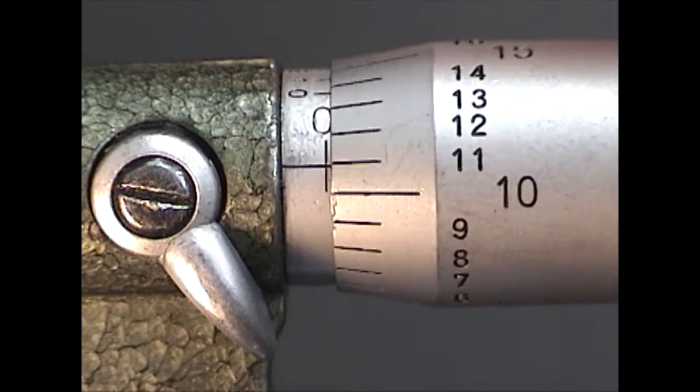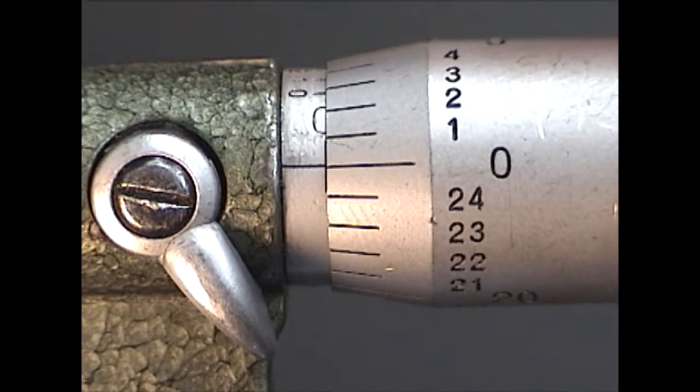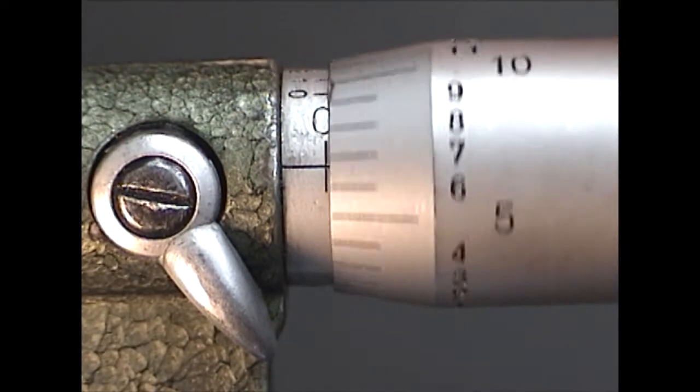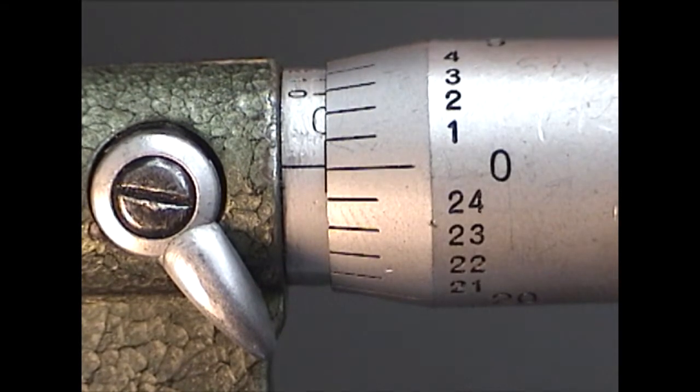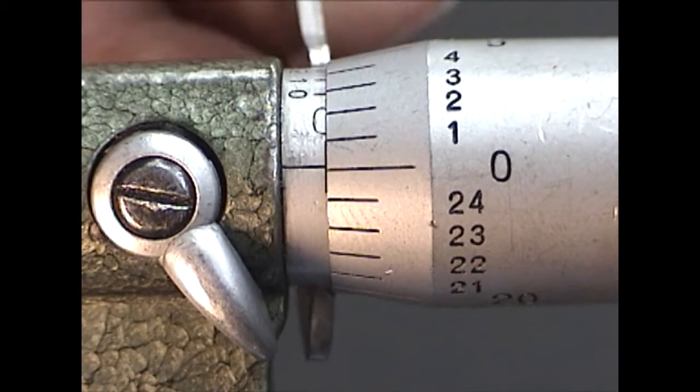After making an adjustment, open and close the micrometer several times, each time checking to see if the zero lines are properly lined up. If not, an adjustment will be necessary.